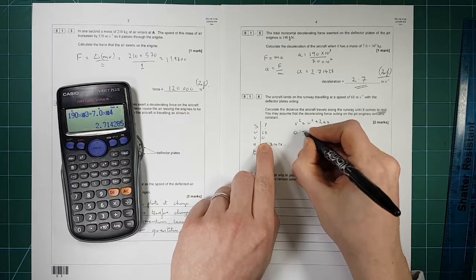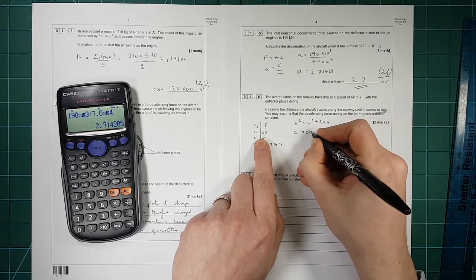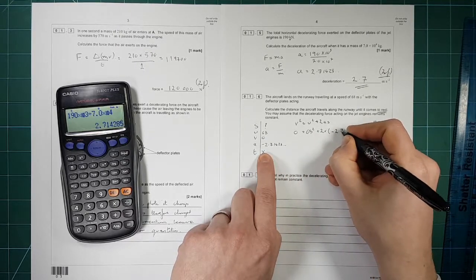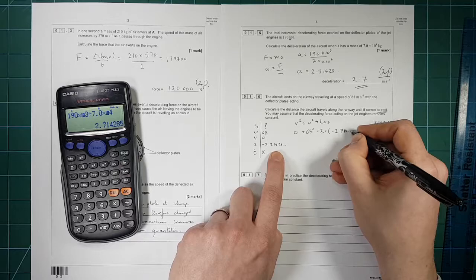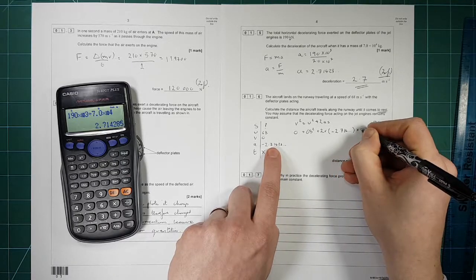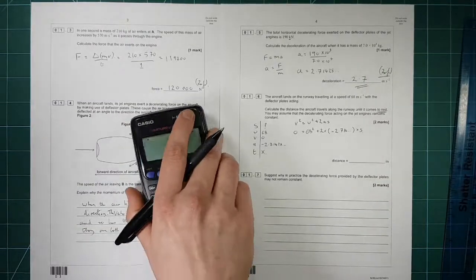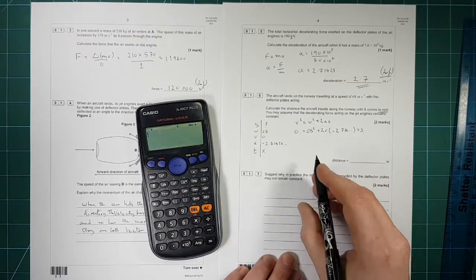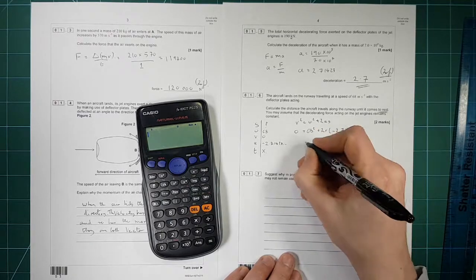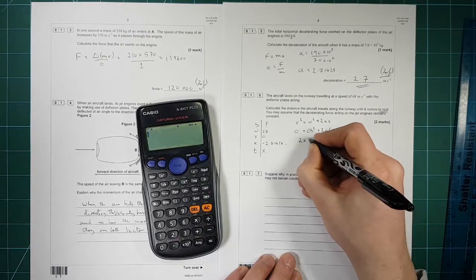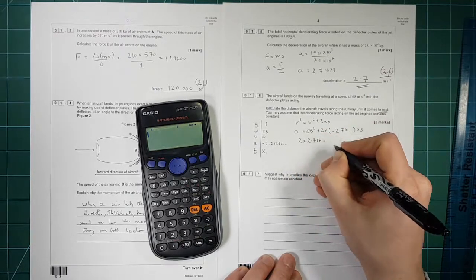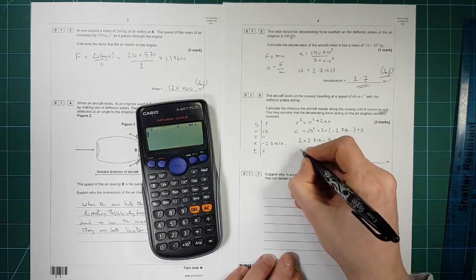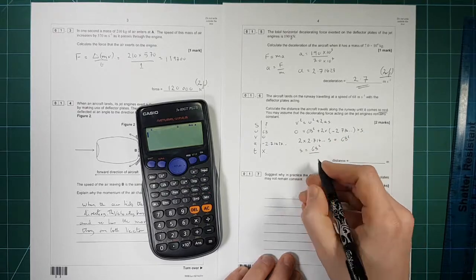So V squared is zero. Is equal to U squared, 68 squared. Plus 2 times by. And then the acceleration is minus 2.714, etc. Times by the distance, which is S. We don't know. So we're going to solve this now. This is negative here. So if we bring it over to the other side, it'll become positive. So we're going to have 2 times by 2.714, etc. S is equal to 68 squared. So S is equal to 68 squared. Divided by. Move all of that down there. 2 times by 2.714.